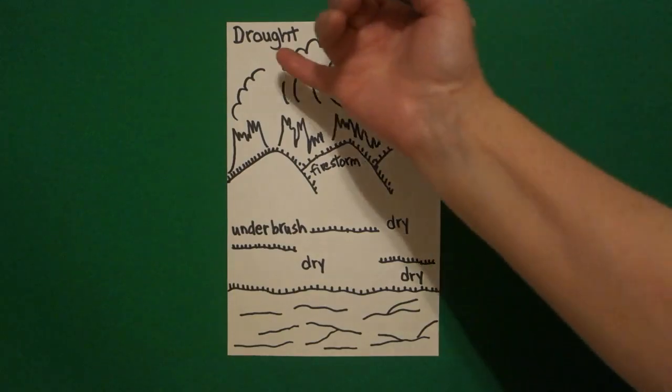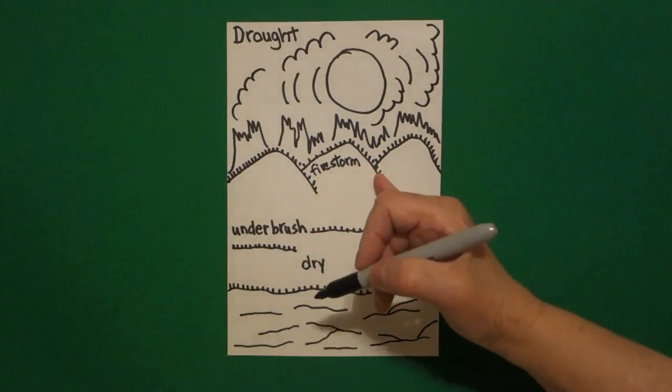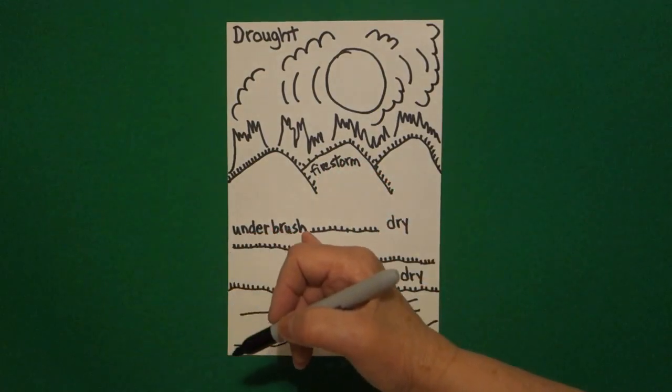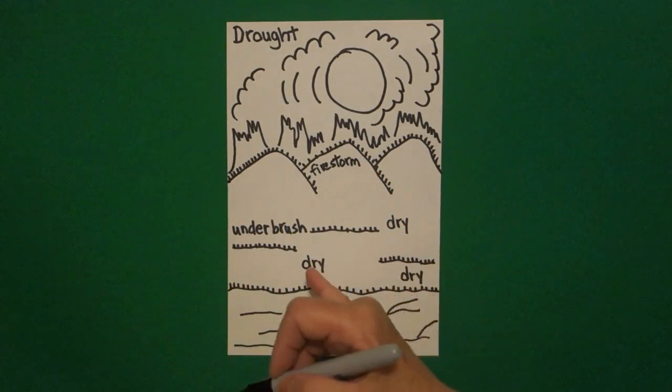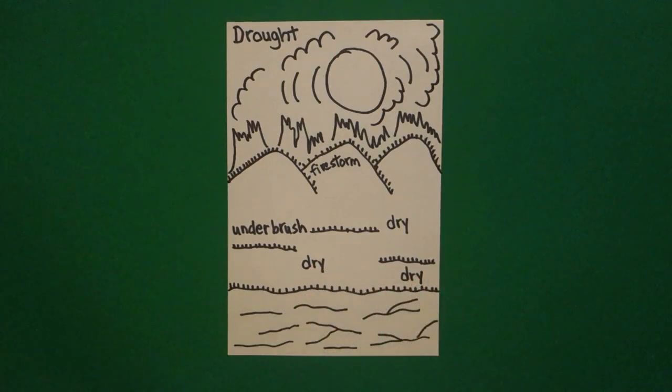Okay, so we have our drought, we have our firestorm, we have our underbrush, it's dry, dry, dry. Now, this is also part of climate change, because it is hotter now than it's ever been, and I can attest to that, because I'm in California.